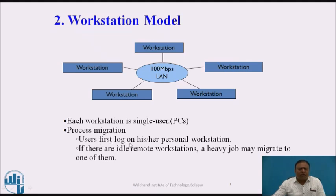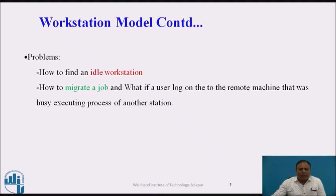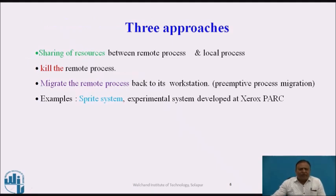In process migration, the user first logs on to their personal workstation. If there is an idle remote workstation, a heavy job may migrate to one of them. There are major problems in the workstation model: first, it is very difficult to find an idle workstation; second, it is very difficult to migrate a job to another machine that is busy executing another process. Three approaches are considered: sharing of resources between remote and local processes, either sharing or killing the remote process, or migrating the remote process back to its workstation — this is called primitive process migration. Examples of this model are the Sprite system and the Experimental system developed at Xerox PARC.